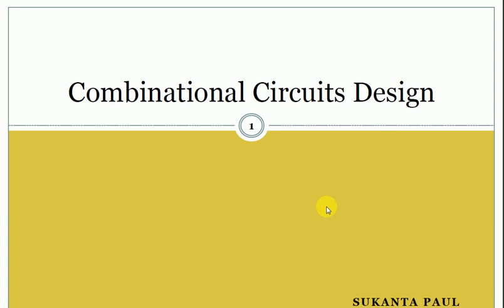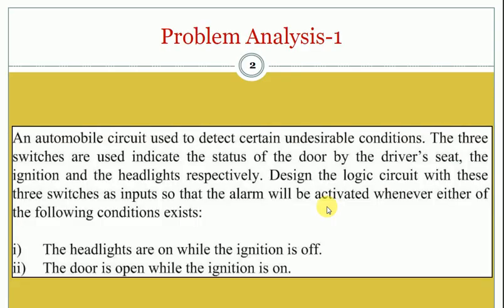Let us proceed to the first design. Our first problem is there is an automobile circuit which is actually used to detect certain undesirable conditions. There are three switches: one is used for indicating the status of the door by the driver's seat, another is for the ignition, and another is for the headlights.